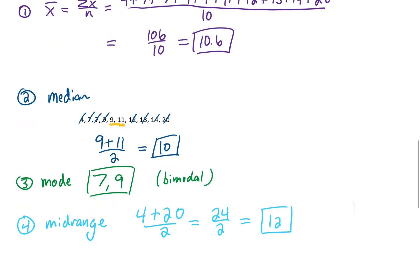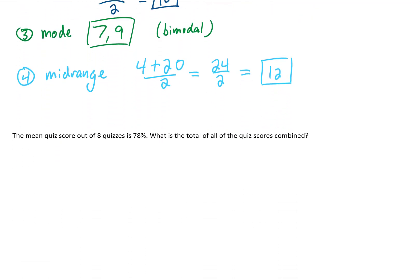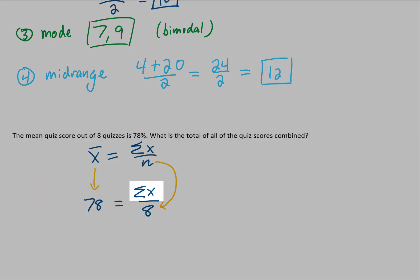Let's take a look at a couple of example problems. We're told that our mean quiz score out of 8 quizzes is 78%, and we want to find the total of all of the quiz scores combined. Looking at the formula for mean, we're told the mean is 78% and n is 8. We're asked to find the sum of all of our quiz scores combined.